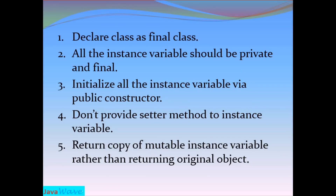There are five rules to create any class as an immutable class. First, declare the class as final so no other class can extend it or override its methods. Second, all instance variables should be private and final so that once initialized, their values cannot be modified within the class. Third, initialize all instance variables via a public constructor. Fourth, don't provide setter methods for instance variables so their values cannot be set again. Fifth, if using any mutable object as an instance variable, return a copy of the mutable instance variable rather than the original object.